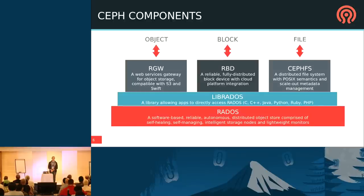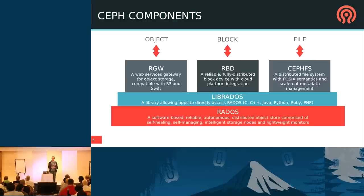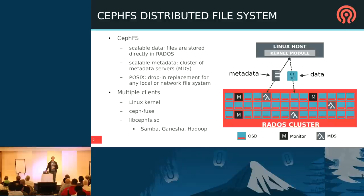No Ceph talk would be complete without this diagram — the high-level Ceph architecture. It's all based on RADOS, the distributed object store at the bottom that manages distribution and replication of all data. If nodes fail, it migrates data, re-replicates it, and ensures data is separated across failure domains. On top of RADOS, we build several high-level services: the RADOS Gateway giving you S3 and Swift-compatible object storage, RBD for block storage, and CephFS, which gives you a fully distributed POSIX file system.